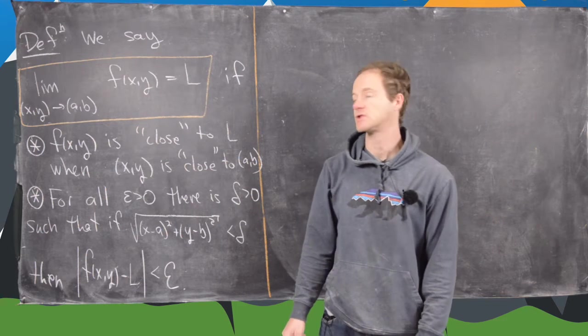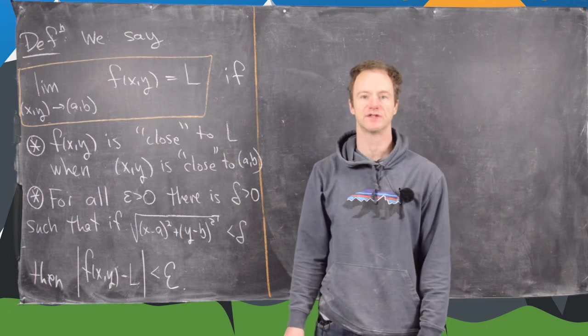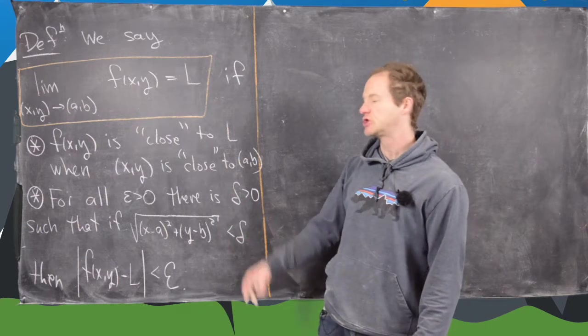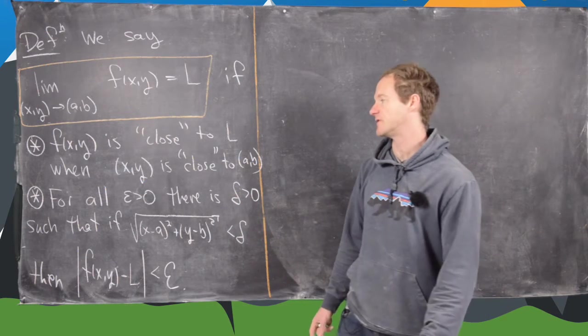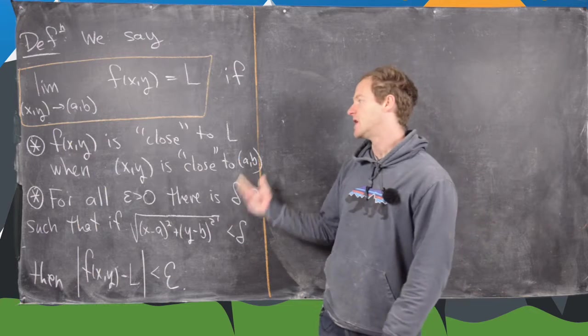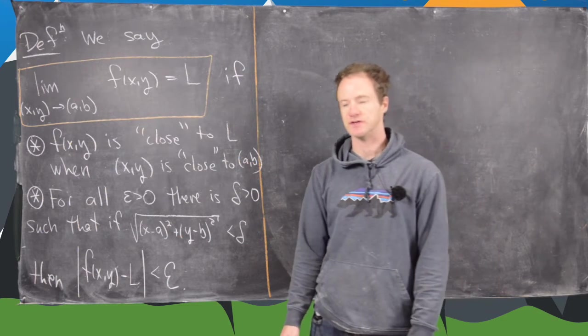Okay, in this video we're going to start talking about limits of functions with more than one variable. I'm going to give you two definitions of this limit. One is proper and one is kind of sketchy, but the sketchy one will be the one that we'll generally be using.